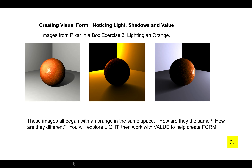Creating visual form means noticing light, shadows, and value. These three images are from a Pixar in a Box exercise called 'Lighting an Orange.' They all began with an orange in the same space. How are they the same and how are they different? Where is the light coming from? Does the light bounce off of a place?